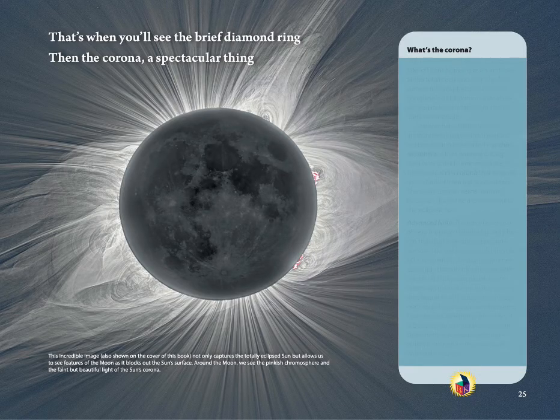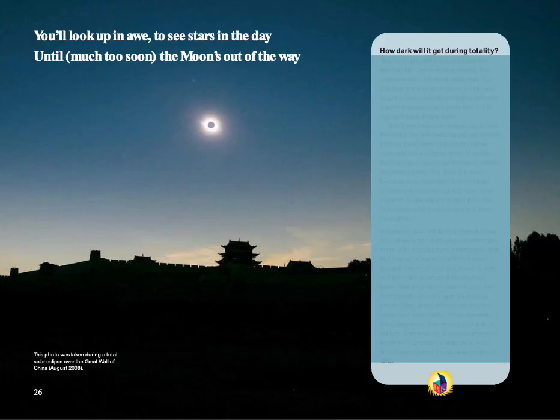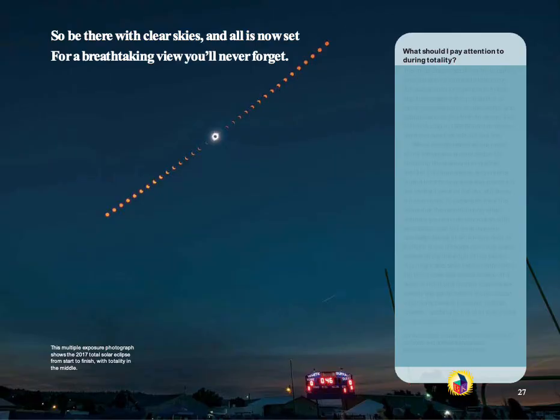That's when you'll see the brief diamond ring, then the corona, a spectacular thing. When the diamond ring occurs and totality begins, you can take off the eclipse glasses and you'll see the sun's corona. Of course, to your eyes it won't look quite as spectacular as in this photo, but it will still be amazing. You'll look up in awe to see stars in the day, although much too soon the moon's out of the way. So be there with clear skies and all is now set for a breathtaking view you'll never forget. I hope you are excited to see a total solar eclipse.